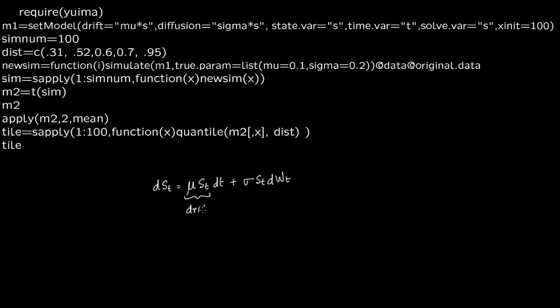That's what you write here: drift is µS, your state variable is S, time variable is T, you solve for S. Your initial stock price is 100, so we are going to do 100 such simulations and then based on the simulations we will construct a distribution function.